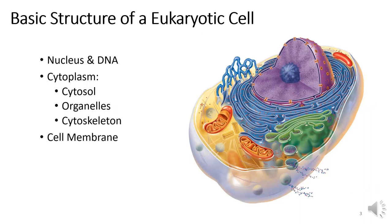Regardless of cell type, most cells have the same basic structure. That includes a nucleus that houses DNA, cytoplasm consisting of the viscous fluid cytosol and internal structures called organelles, as well as cytoskeletal proteins that give the cell shape. The third component is the cell membrane, which forms the boundary of the cell and most importantly can interact with the environment in which it exists.